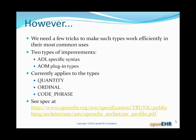So we tend to need a few tricks to make some of these types work efficiently in their most common uses. There's two kinds of things that we can do. We have some ADL specific syntax. That means that the ADL language for expressing what we need will be smaller, more efficient, more obvious. And also what we call AOM plugin types, which we'll explain in a minute. Now in health, at least in ADL and AOM is applied to health, the types that we've added some specific improvements for are quantity, ordinal, and code phrase. They're all three extremely common. And the way they need to be constrained doesn't quite fit the most basic possibilities of ADL. The specification that defines these additions to ADL extensions is shown at the bottom of the screen there.